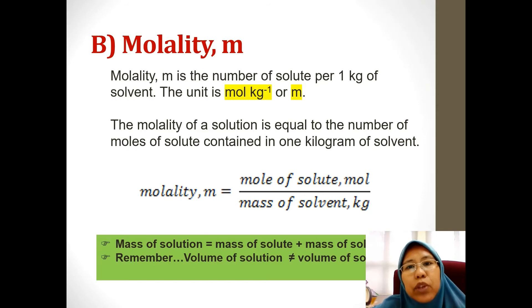Molality is the number of solute per 1 kilogram of solvent. The unit used is mol per kilogram or small case m. The molality of a solution is equal to the number of moles of solute contained in 1 kilogram of solvent. The formula is mol of solute in unit mol divided by mass of solvent in unit kilogram. Here we have to remember that the solution equals to the solute plus solvent in terms of mass. If the question gives you the volume of solution, it is not the same as the volume of solvent. You have to deduct the mass of solute from the solution.